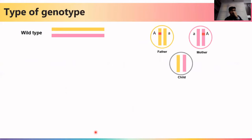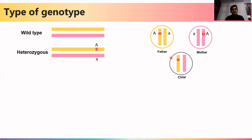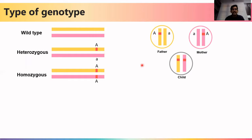Now let's look at how variants are inherited within a family. If both father and mother carry a heterozygous variant (capital A), and the child inherits the wild-type copy from both, the genotype will be wild type with no variant. If the child inherits the variant copy from the father but the wild-type copy from the mother, that genotype is called heterozygous — only one copy of the gene carries the variant. If the variant is inherited from both parents, the genotype is homozygous.